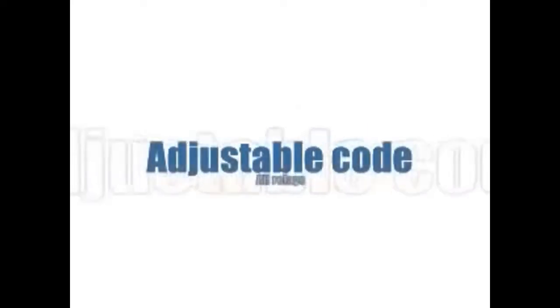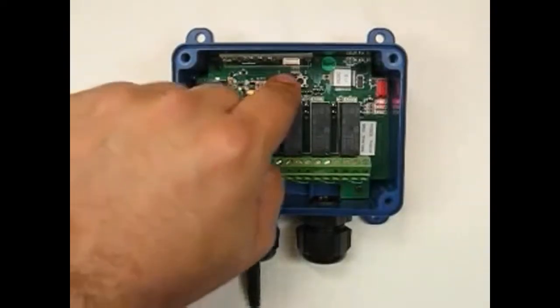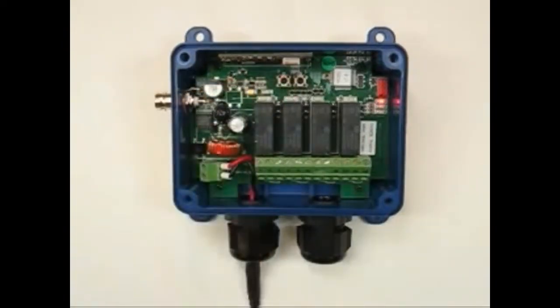Learning the Transmitter's Adjustable Code. First, press the function button once. You will notice that red LED number 6 will be lit up.